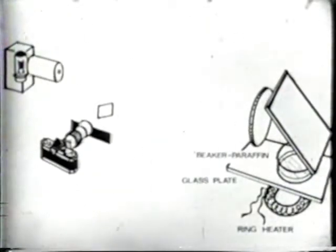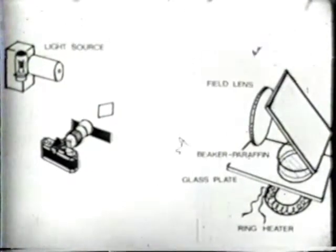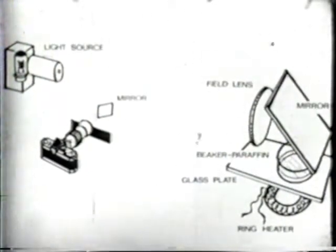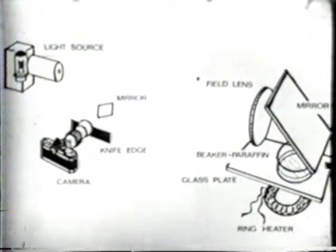The optical model consists of a light source, a large field lens, two first surface mirrors, a knife edge, and a camera with a long focus lens.